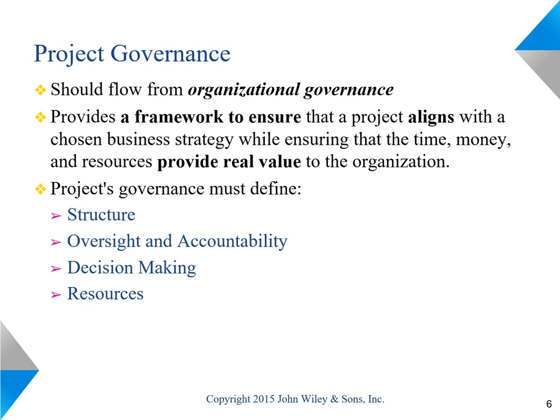Organizations typically create an organizational governance structure to set the strategic direction and assess performance. In fact, having a governance structure is a legal requirement for publicly traded companies in the U.S. Organizational governance authorizes a project after ensuring that it is aligned with the organizational strategy and delivers real value to the organization. Project governance should provide the structure for proper oversight and accountability, set a clear direction, support the decision-making process, and ensure that the project is adequately resourced.